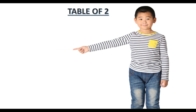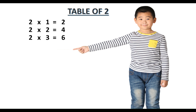Table of 2. 2 1's are 2, 2 2's are 4, 2 3's are 6, 2 4's are 8, 2 5's are 10.